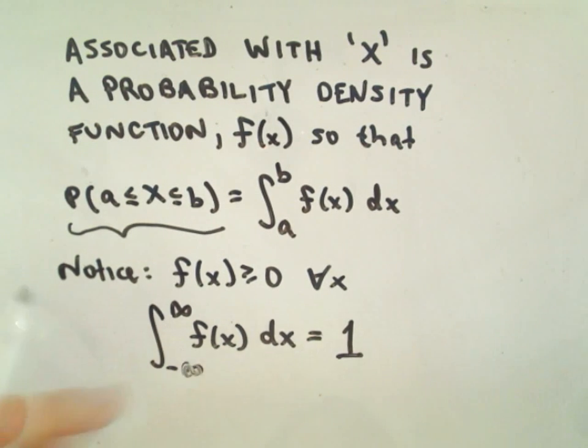And if we integrate from negative infinity to positive infinity, you're calculating the probability of everything that can happen. The total probability always has to add up to one or a hundred percent.